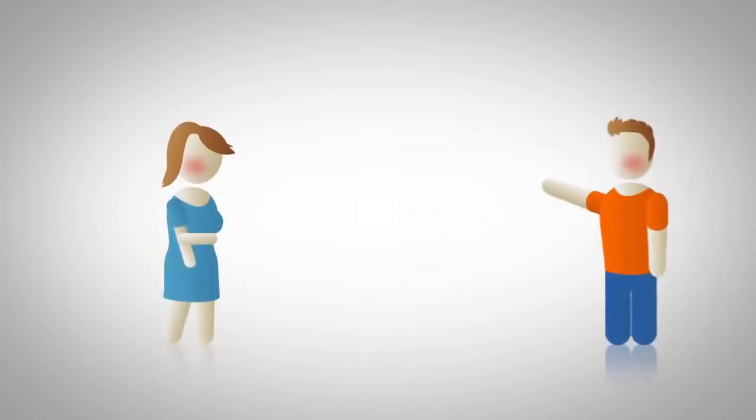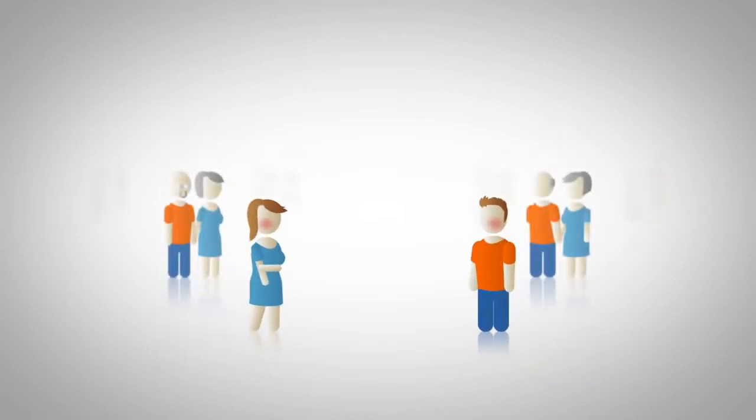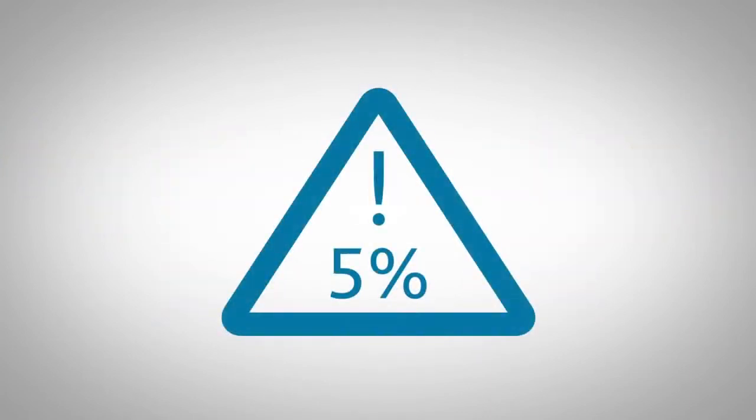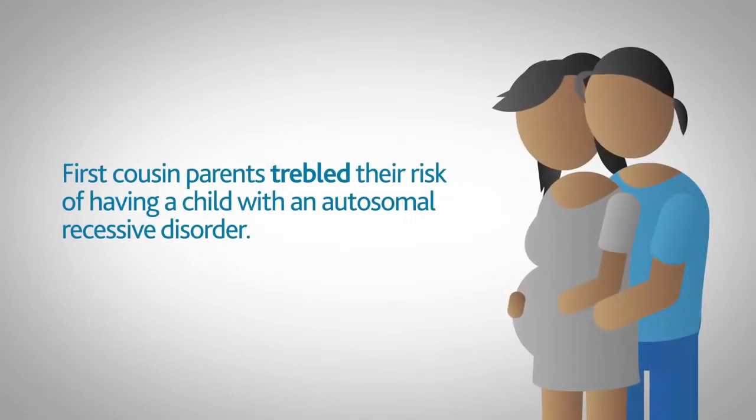If there is consanguinity in previous generations and the couple come from a small isolated population, the risk to the children of a first cousin relationship does increase to greater than 5%. A 1993 study showed that for families where consanguinity had been practiced for many generations, first cousin parents trebled their risk of having a child with an autosomal recessive disorder.